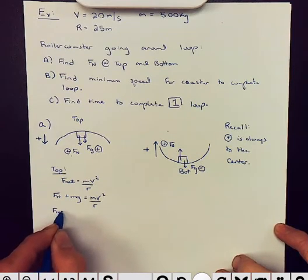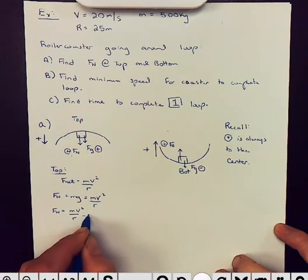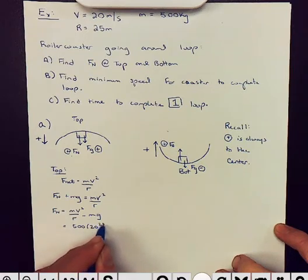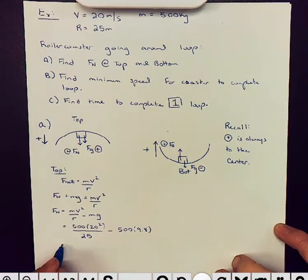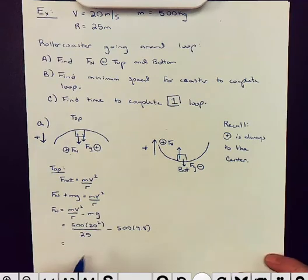So, normal is going to be mv squared over r minus mg. So, that's going to be 500 times 20 squared divided by 25 minus 500 times 9.8. Now, bear with me because I need a calculator. I am going to get 3100.